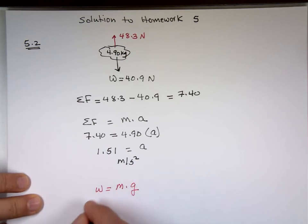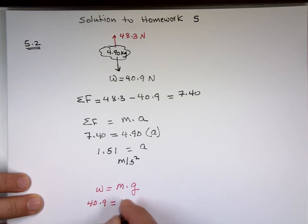Weight equals mass times gravity. What was the weight of the rock? 40.9. What was the mass of the rock? 4.90 times gravity.